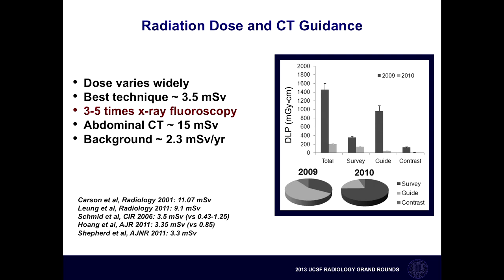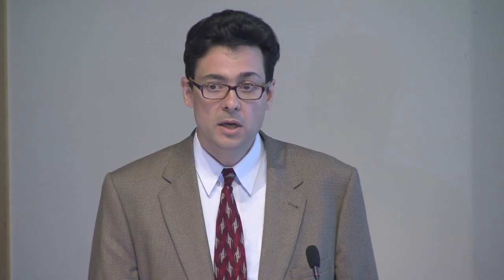Another good landmark for comparison is background radiation — what you get from radon and solar radiation. Background environmental radiation is about 2.3 millisieverts per year. So getting a CT-guided lumbar injection, on average, imparts between one and two times the very low dose you would just get from the environment on average.